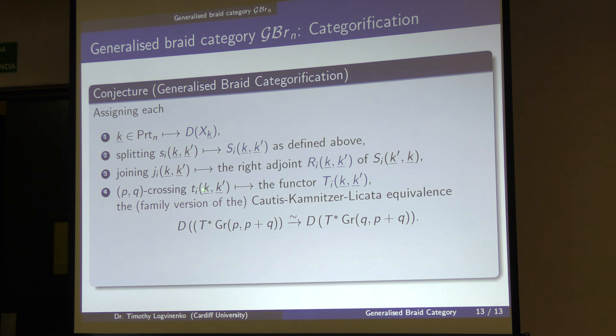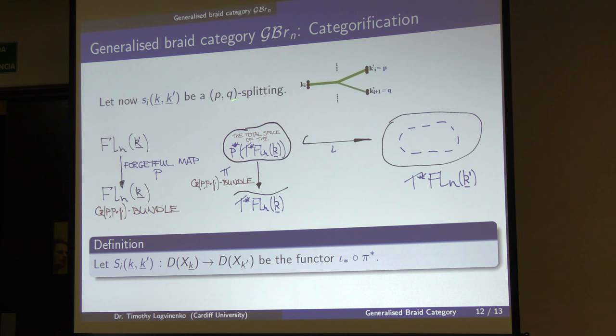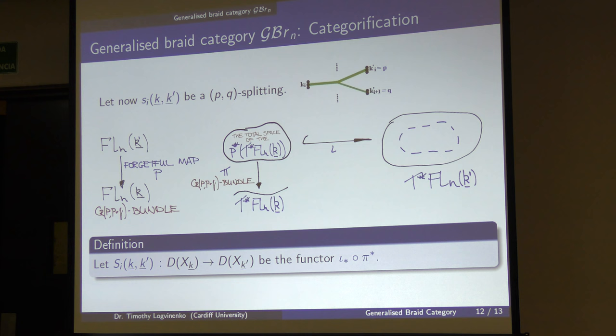For crossings — that's where we were stuck for a long time. We were going to define them using an inductive procedure. One important thing to note: this functor is only spherical when P and Q are both 1. When P is 1 and Q is N−1, this is what's known in the literature as a P^N functor, which generates an auto-equivalence. More generally, there is no notion of Grassmannian functor in the literature. After thinking about this for a while, we've realized that most likely there shouldn't be a notion of Grassmannian functor — there should instead be a notion of a Grassmannian system.